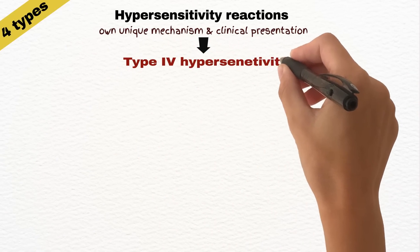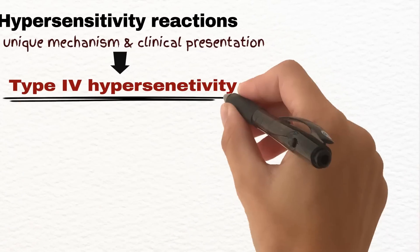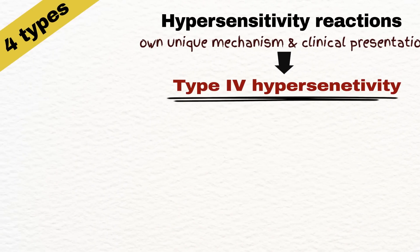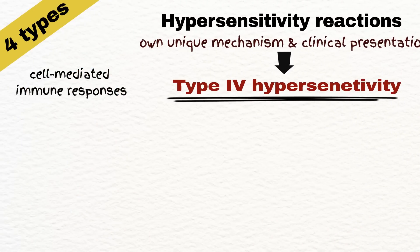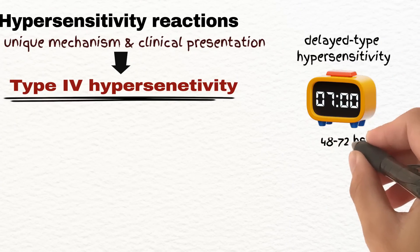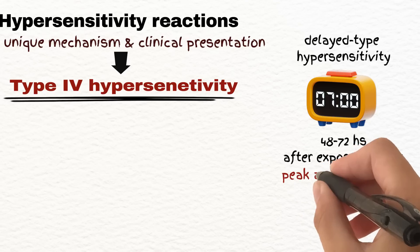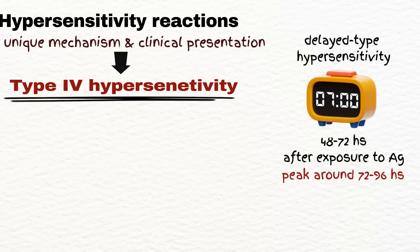Type 4 hypersensitivity reactions, also known as delayed-type hypersensitivity reactions, are cell-mediated immune responses that typically occur 48 to 72 hours after exposure to the antigen, peaking around 72–96 hours. While the initial reaction may resolve within a few days, chronic exposure or persistent antigens can lead to prolonged reactions lasting weeks, months, or even years.